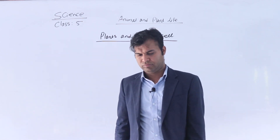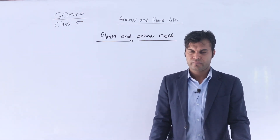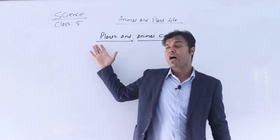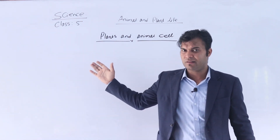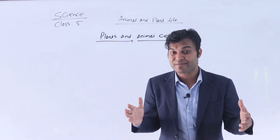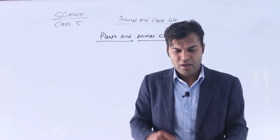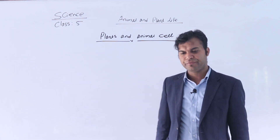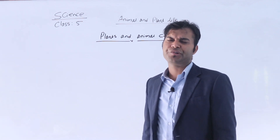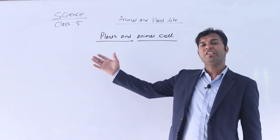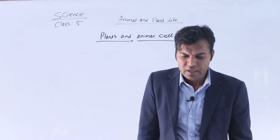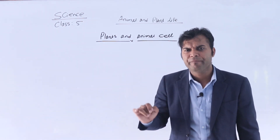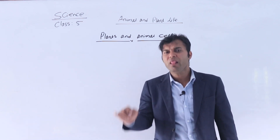A plant cell has a large vacuole. Both plant cells and animal cells contain vacuoles. However, plant cells have a larger vacuole than that of the animal cell. Vacuoles are permanent in the plant cell, but in the animal cell, vacuoles are temporary. Sometimes, vacuoles are not found in an animal cell at all.